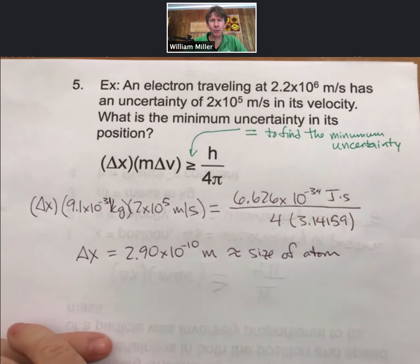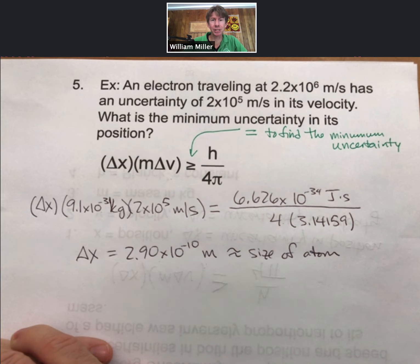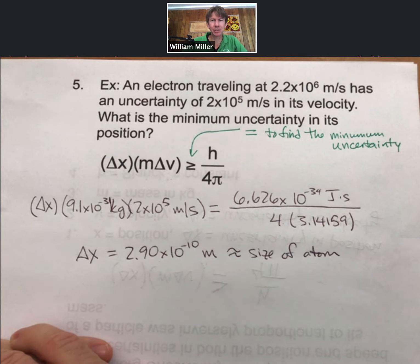What that means for us is that we will only discuss the electron in terms of probabilities of finding it in certain orbits or orbitals, as we have coming up.